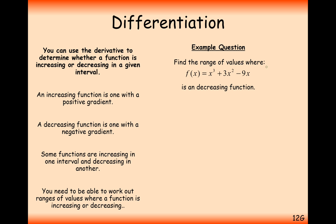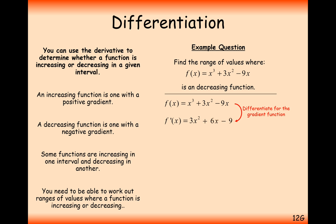For this question, find the range of values for which x³ + 3x² − 9x is decreasing. We need to find which values give a negative gradient. So we differentiate first, giving 3x² + 6x − 9. We now want to find when this is negative, so we solve 3x² + 6x − 9 < 0.